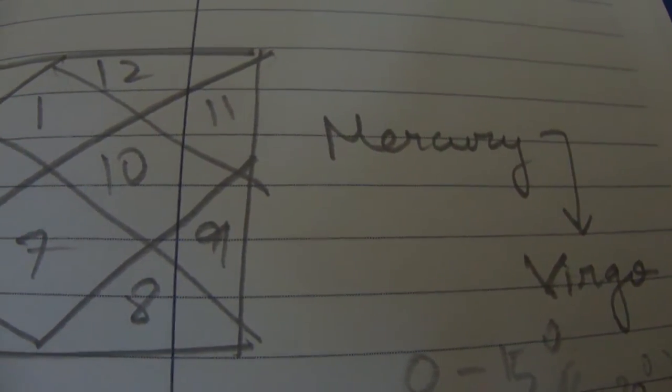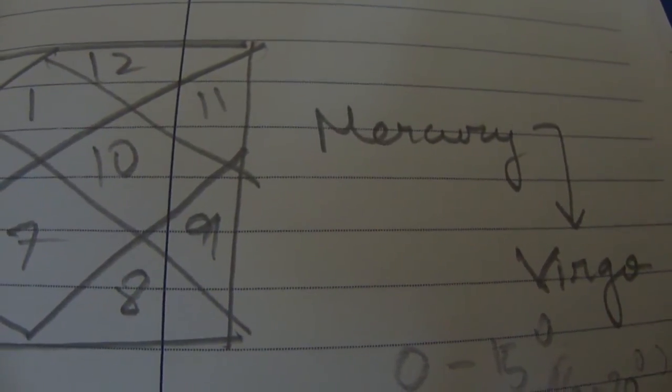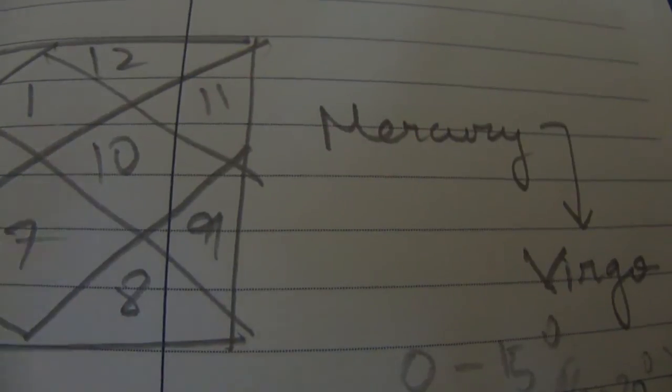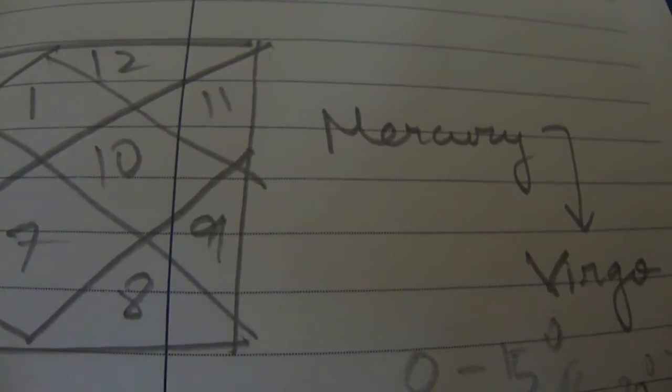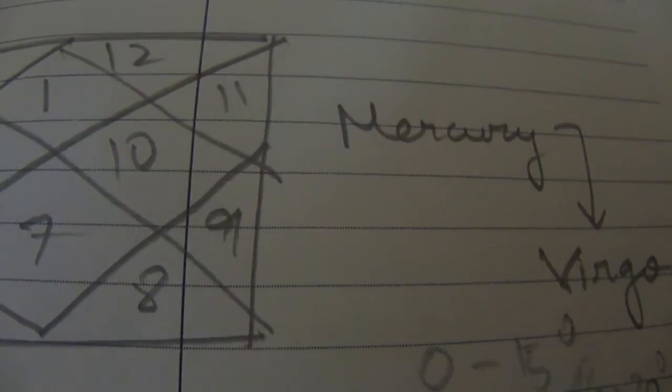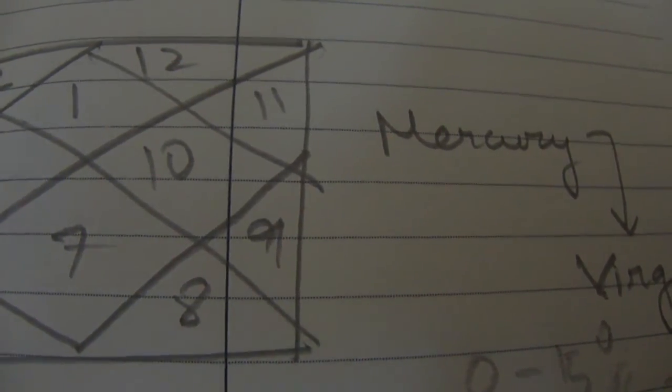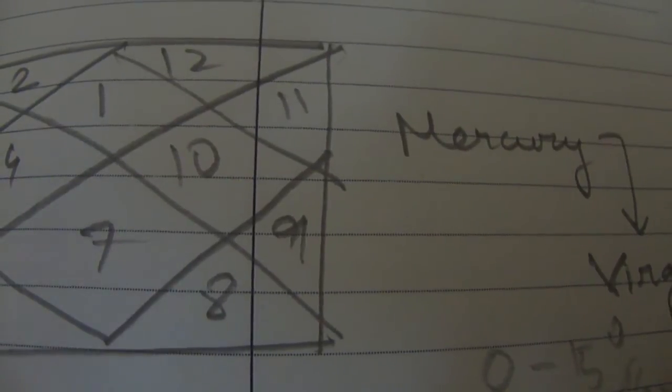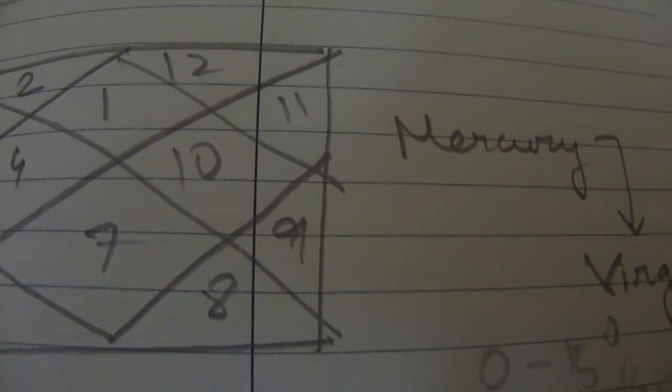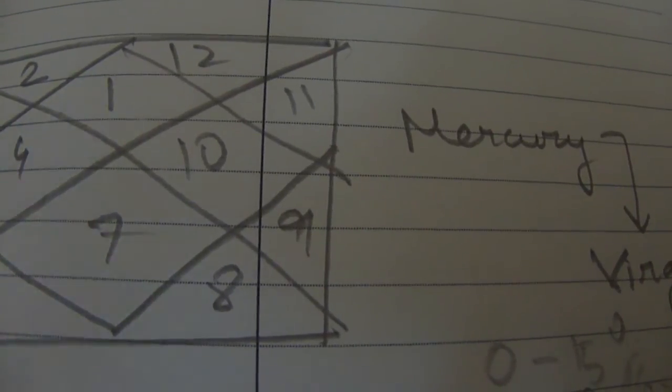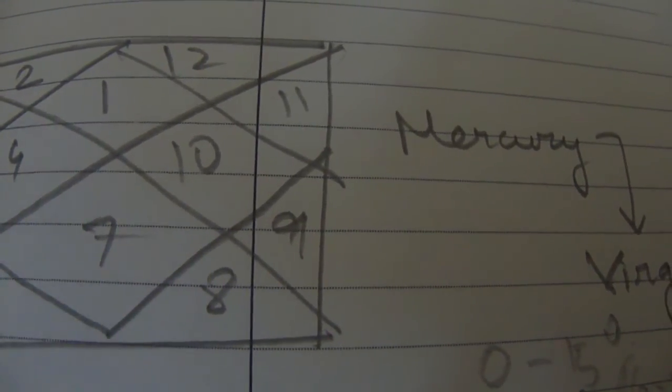Now Mercury in Virgo, what else it will do is it will give you a very good rational thought process. But again, you have to understand that this combination starts giving result after the age of 30 or 32-ish because Mercury attains its maturity at that age. So what will happen is that you will gradually become rational.